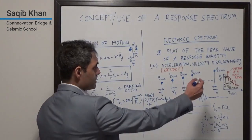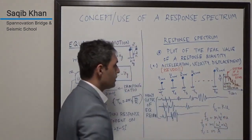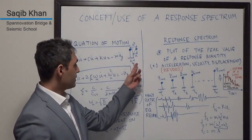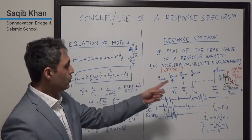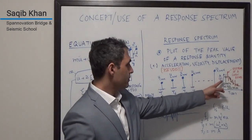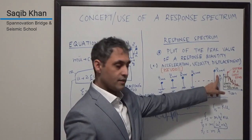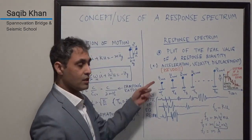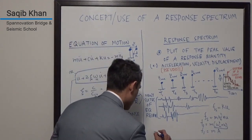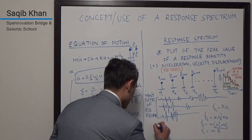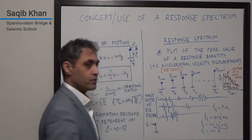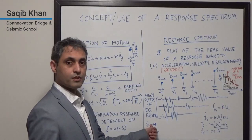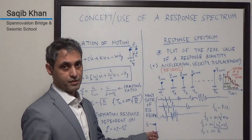So the way the spectrum helps us out is we can figure out the natural period or natural frequency of a single degree of freedom system. We go into our spectrum, our smooth design spectrum. We pick out the pseudo-acceleration. We multiply that by the mass, and we stick that force at the CG of the system. So essentially, you now design it for this pseudo-static force. You can use this pseudo-static force to get your bending moments and shear forces and design your system.